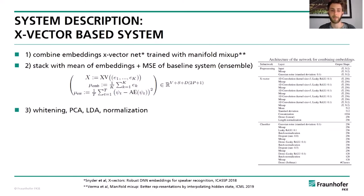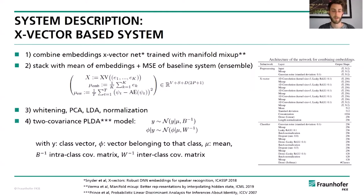These large vectors are further processed by whitening, principal component analysis, linear discriminant analysis, and normalization — all standard methods. Then a probabilistic linear discriminant analysis (PLDA) model is applied, which models the distribution of representations with two normal distributions using an intra-class covariance matrix and an inter-class covariance matrix. A log likelihood ratio can then be calculated as the final decision score, used with a threshold to decide whether a sample is normal or anomalous.